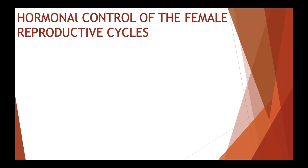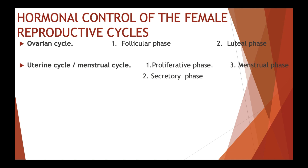Hormonal control of the human female reproductive cycles: although males produce sperm continuously, females produce ova in cycles, once every 28 days. There are two linked reproductive cycles: the ovarian cycle and the uterine cycle. The ovarian cycle consists of two phases — follicular phase and luteal phase. The uterine cycle consists of three phases — proliferative phase, secretory phase, and menstrual phase.